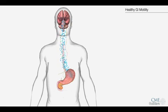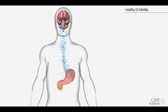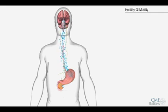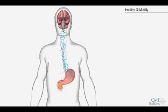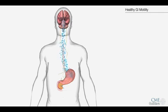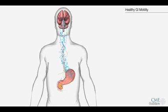Second, ghrelin is absorbed into the bloodstream and circulates, reaching the brain where it may interact with receptors on the hypothalamus. Thirdly, ghrelin travels to the hypothalamus directly through the vagus nerve.